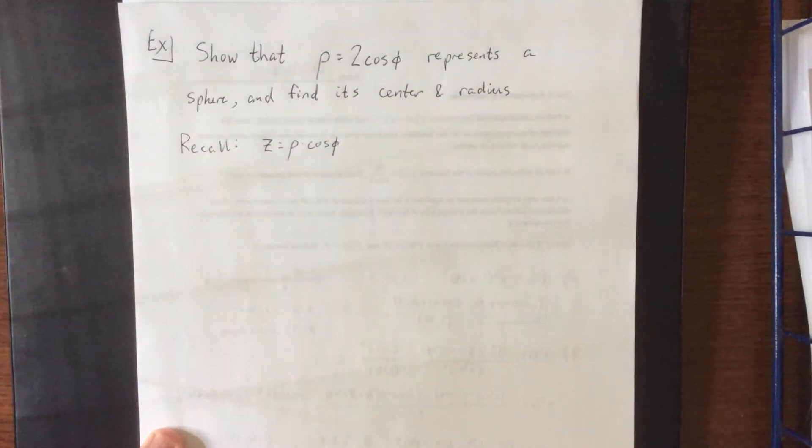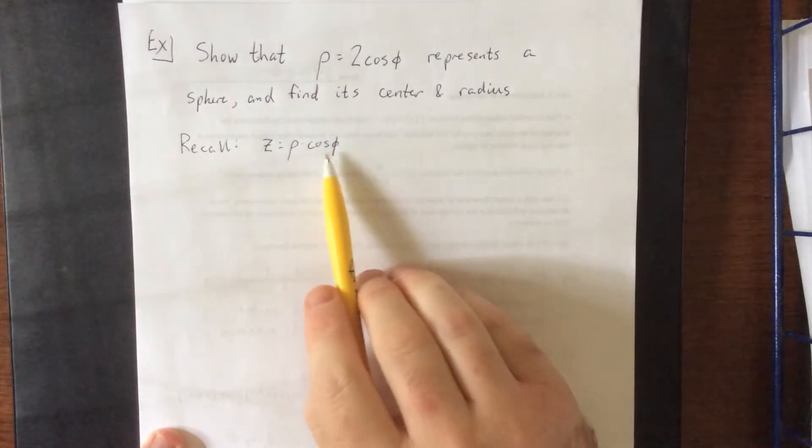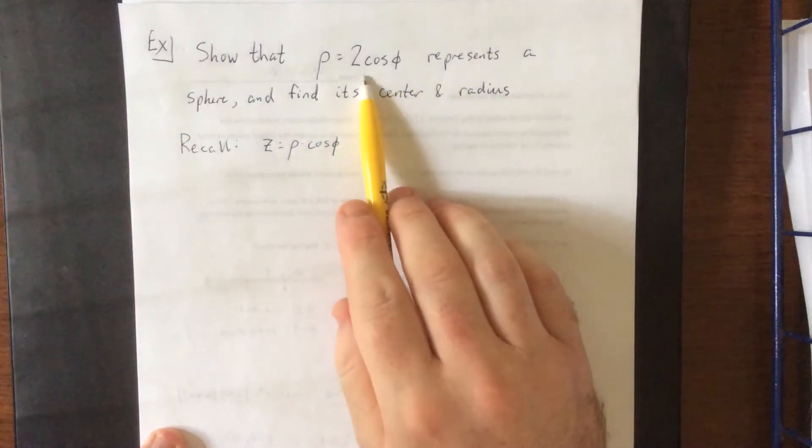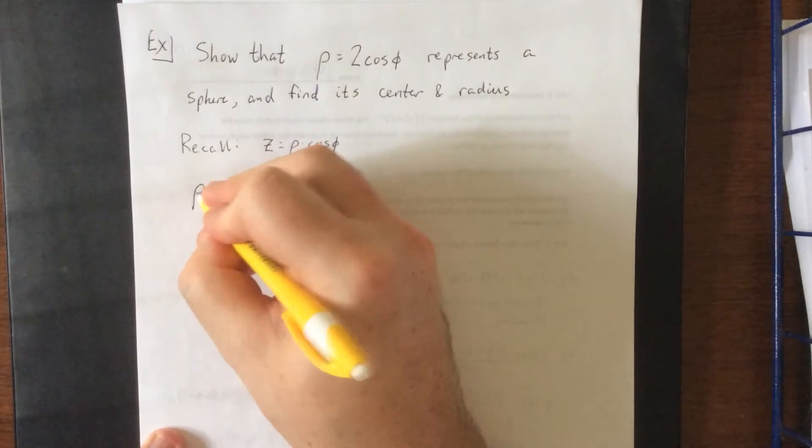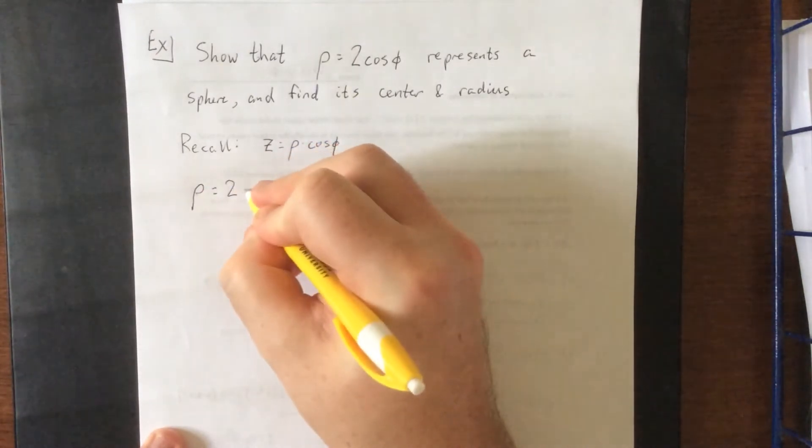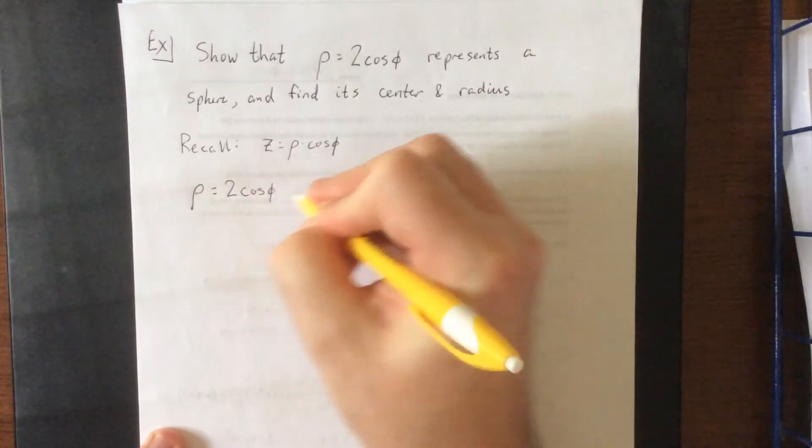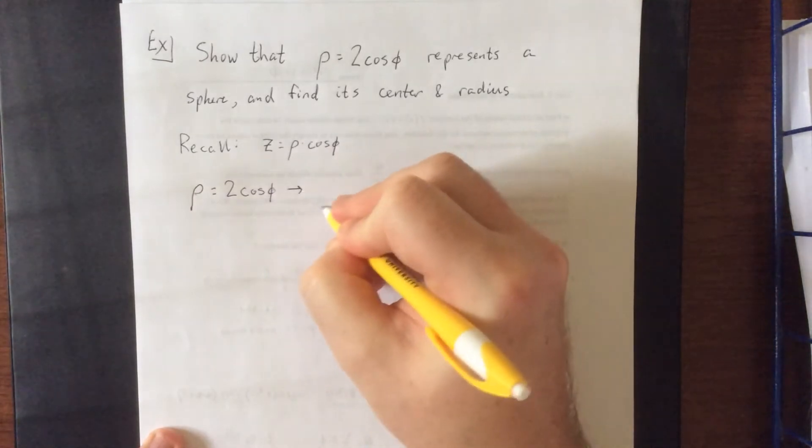Which means that we can't really make a conversion on this unless it's rho times the cosine of phi. So starting with this equation, rho equals 2 times the cosine of phi, I am going to multiply both sides by rho.